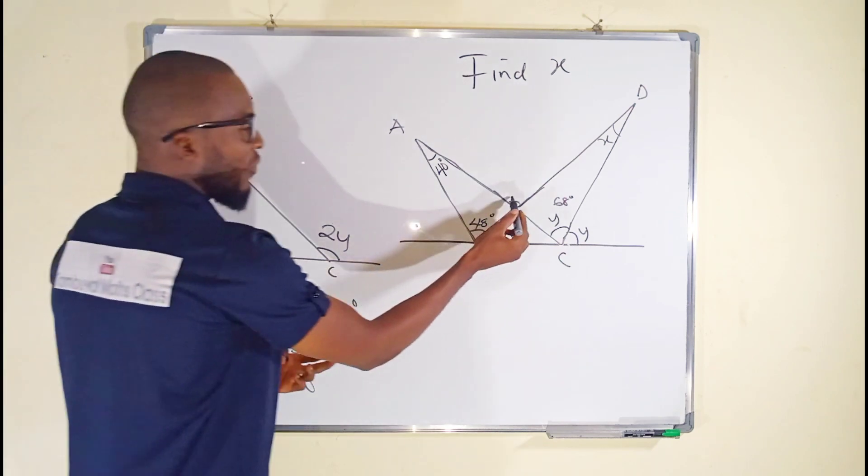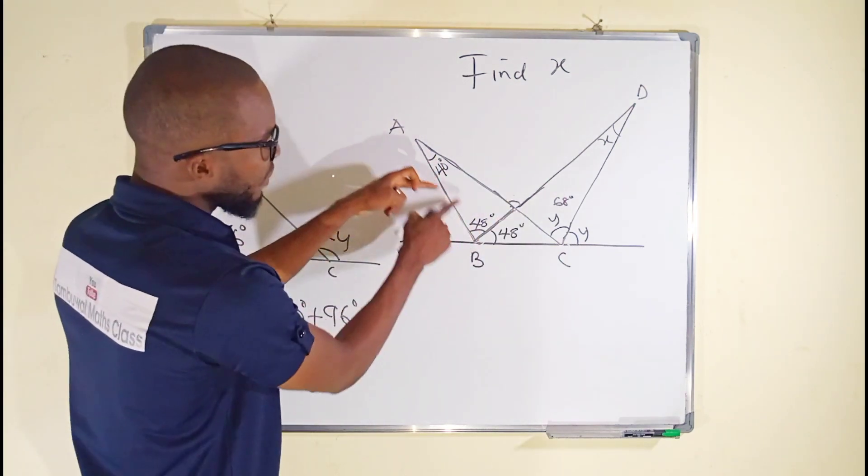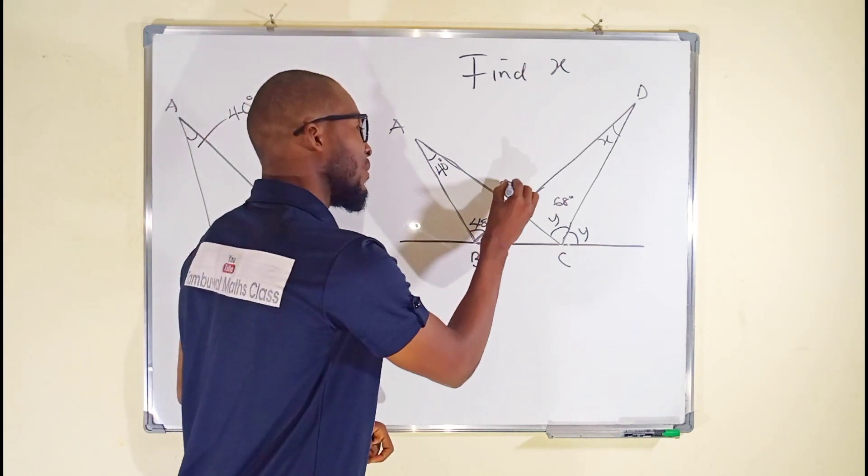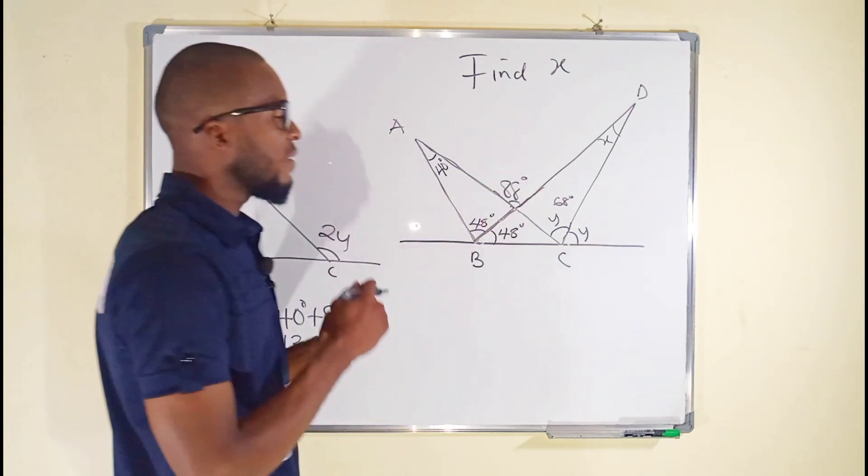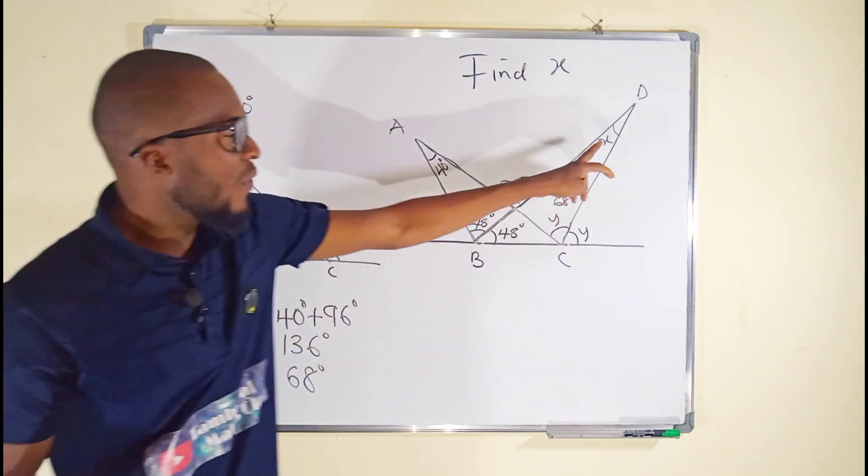The same thing, if you want to find this angle, you can sum the two opposite angles together: 40 plus 48 making 88. So this angle right here is 88 degrees.